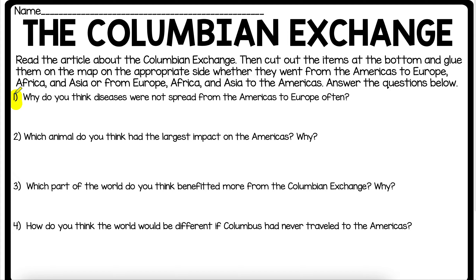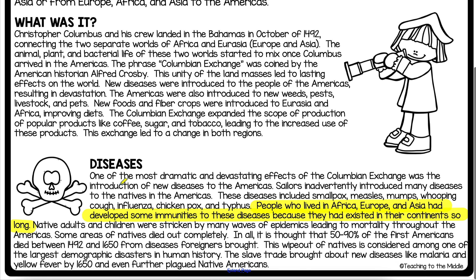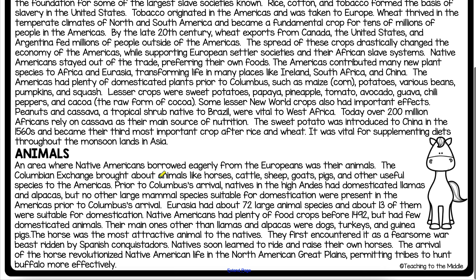I'm going to highlight question one in yellow because that was the color for which we found text evidence. Now moving to the next question: which animal do you think had the largest impact on the Americas and why? I'm going to go back into the reading and find where it talks about animals. There were lots of different animals exchanged back and forth between the Americas and Europe — for example, horses, cattle, sheep, goats, pigs, and other useful species.